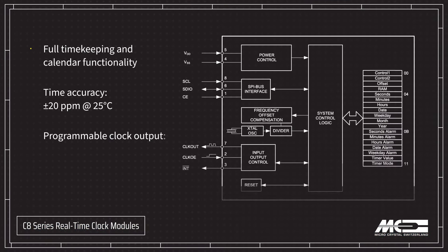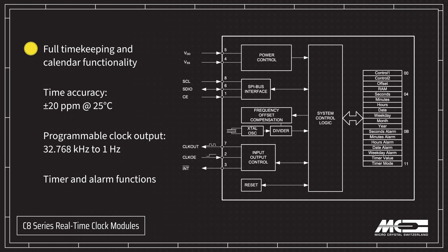The modules provide full timekeeping and calendar functionality from seconds to years, with a ±20 ppm accuracy and a user-programmable offset.